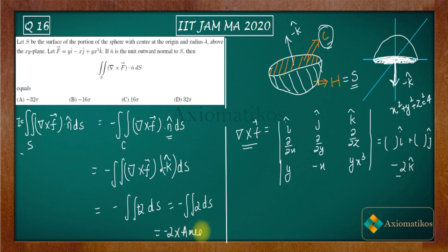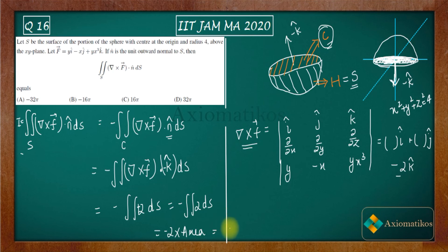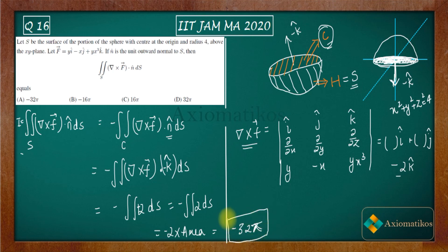So you get 2 times the surface area of the base. That base is a circle of radius 4. The area is πr² = 16π. So the final answer is 2 × 16π = 32π — wait, let me check: it is actually minus times this, so the answer is −32π. I have checked everything and this is your answer.